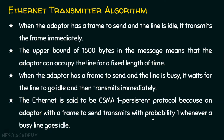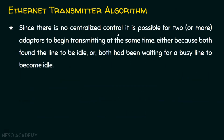Since there is no centralized control in Ethernet, it is possible for two or more adapters to begin transmitting at the same time — either because both found the line to be idle, or both had been waiting for a busy line to become idle. This leads to collision. That is why Ethernet's access method is named CSMA/CD — Carrier Sense Multiple Access with Collision Detection.